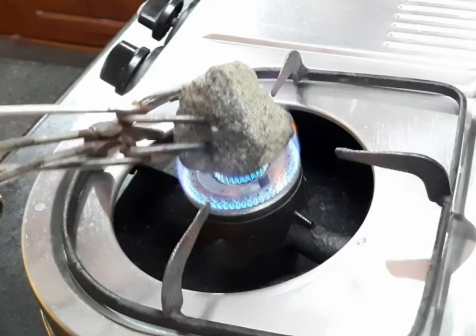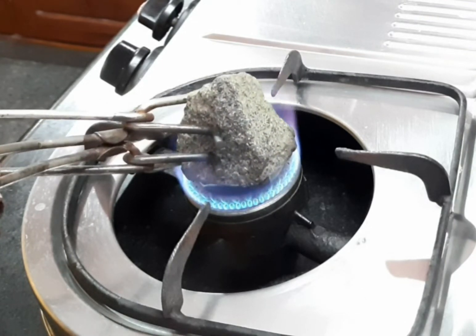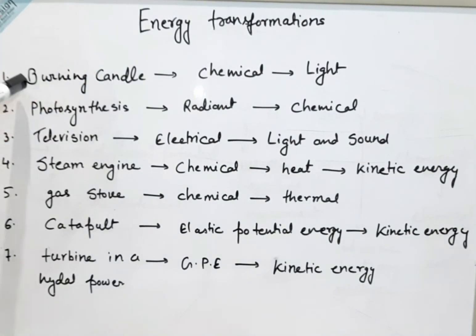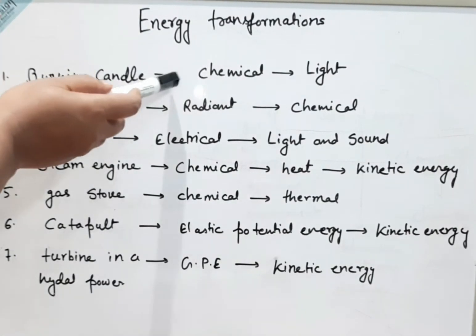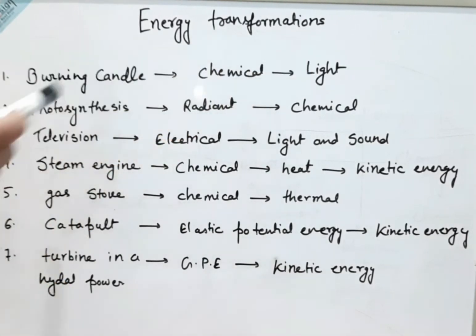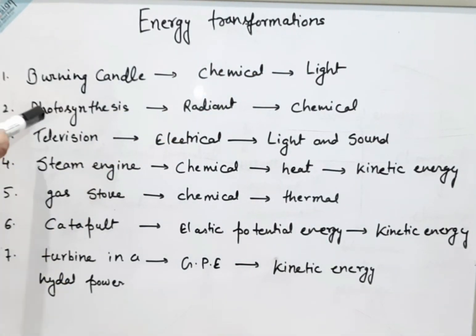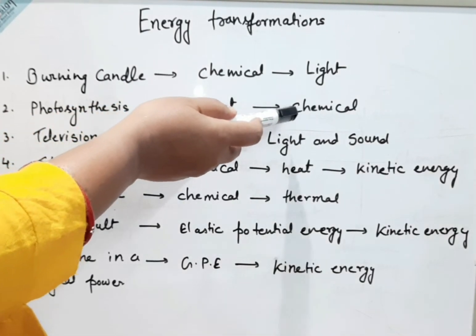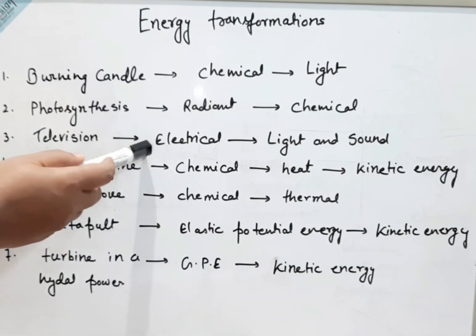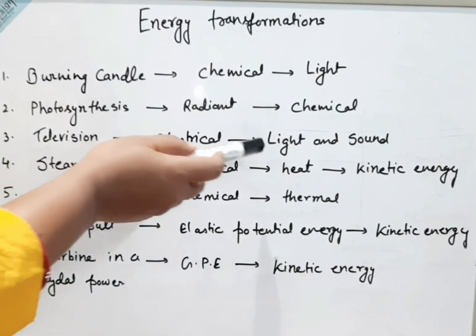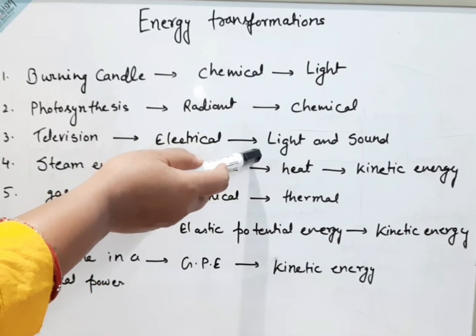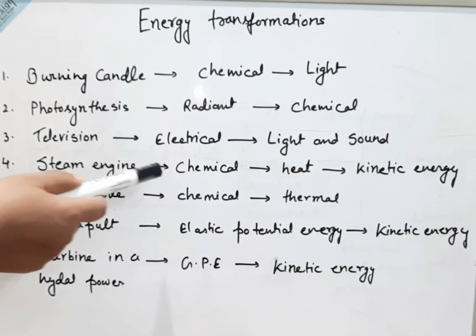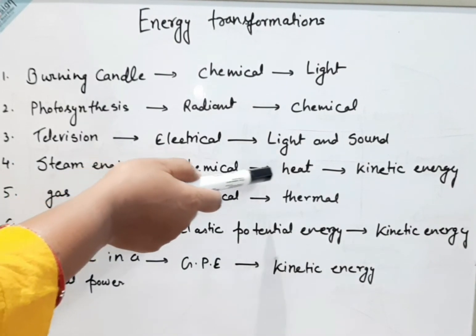These are some important energy transformations. In a burning candle, chemical energy of the wax gets converted into light energy. In photosynthesis, radiant energy of the sun gets converted into chemical energy. In a television, electrical energy gets converted into light and sound energy, with a small loss of energy in the form of heat.